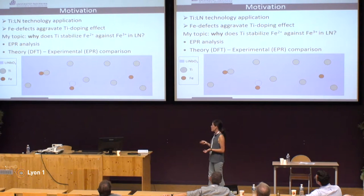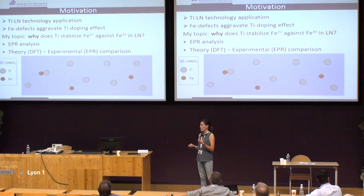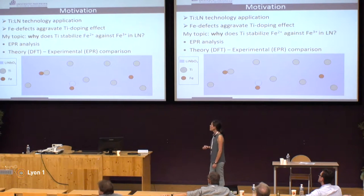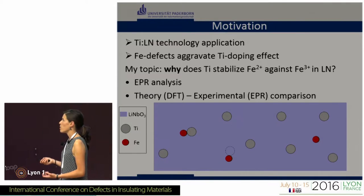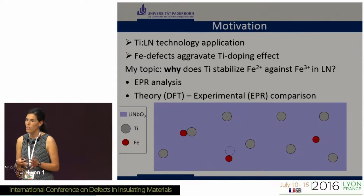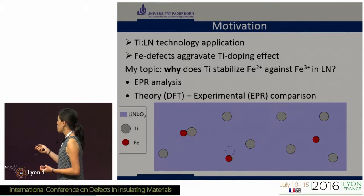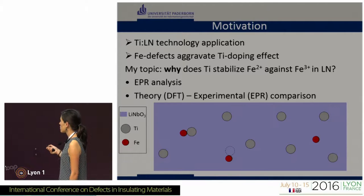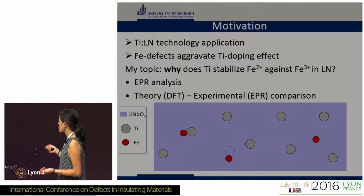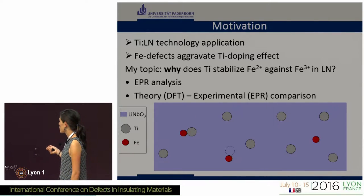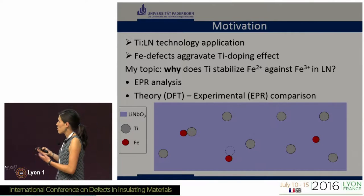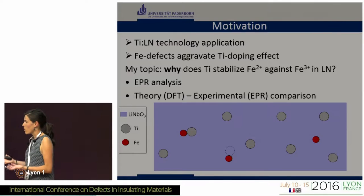My goal is to try to understand why titanium stabilizes iron in lithium niobate. For this goal, I have to investigate the microscopic electronic structure of the defects, using electron paramagnetic resonance and density functional theory. I want to understand if these ions are close together — for example, whether iron sits near a titanium ion or near a vacancy — and how they interact.